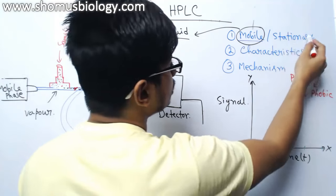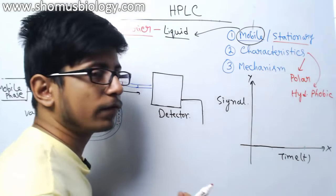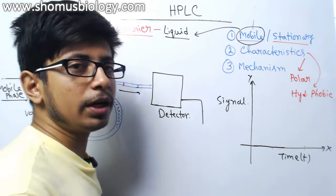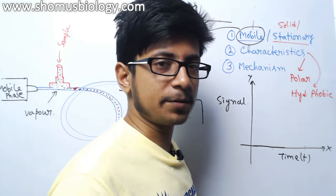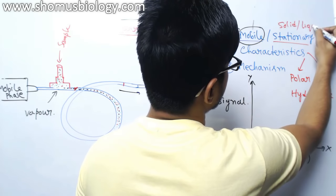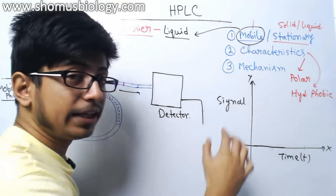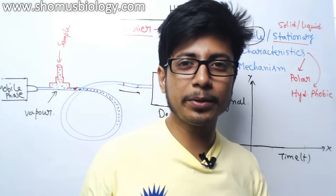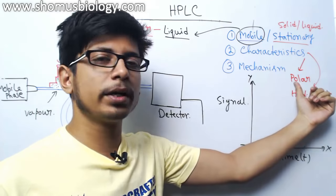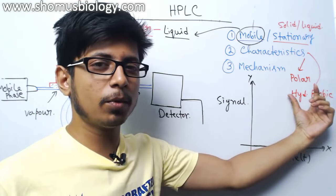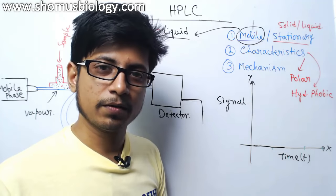The second thing is what is the stationary phase. The stationary phase used in HPLC can be either solid or liquid. An example of a solid stationary phase in HPLC is silica. The mechanism of separation is based on separating polar molecules from nonpolar or hydrophobic molecules. Once you separate them, you can easily separate the chemical compounds from each other.